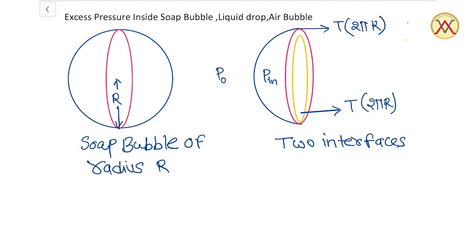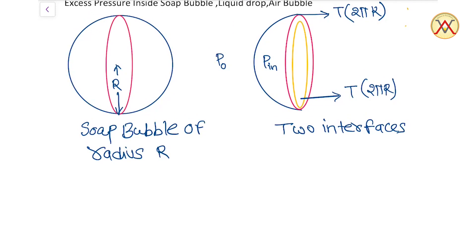In the first diagram we have shown a soap bubble of radius R, and in the second diagram we are showing the left half section of the soap bubble. The pressure inside is denoted as Pn and the pressure outside is denoted as P0. The shape of the soap bubble is concave towards inside and convex towards outside, meaning the pressure inside should be more than the outside pressure, and there is some force due to the excess pressure towards left.